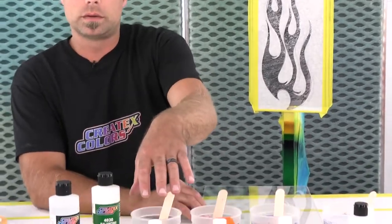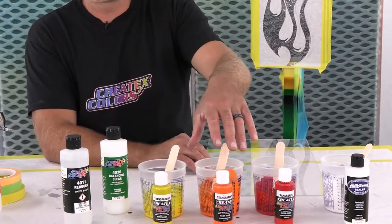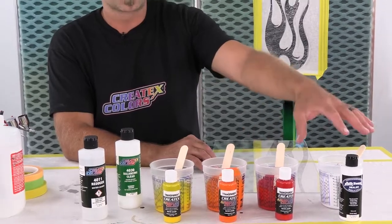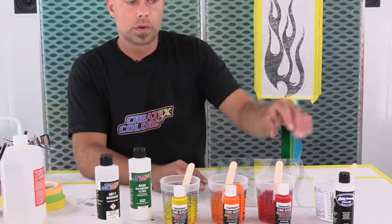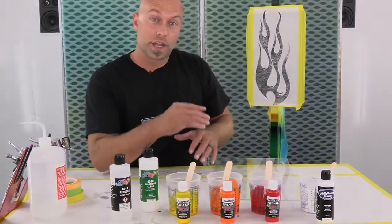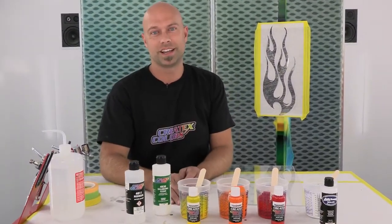We're going to reverse paint this. So we're going to start with our transparent yellow, then we're going to go to our transparent orange. We'll hit it with a transparent red and lastly we're going to back it up to really make it pop with our sealer white. So we're going to paint it in reverse. So stick around. I'll show you guys how to do that.